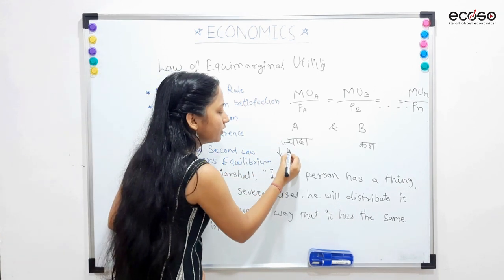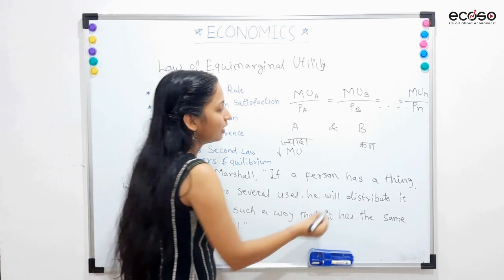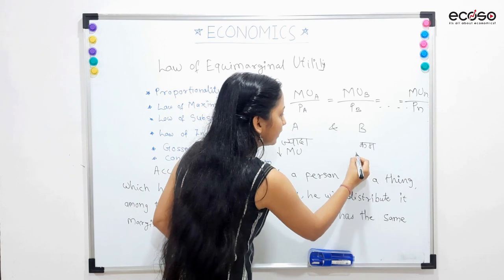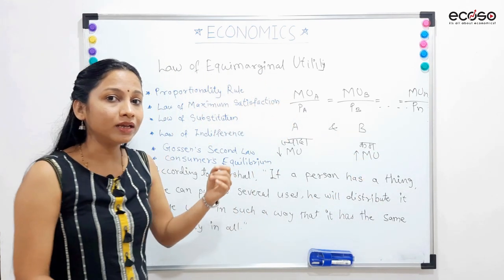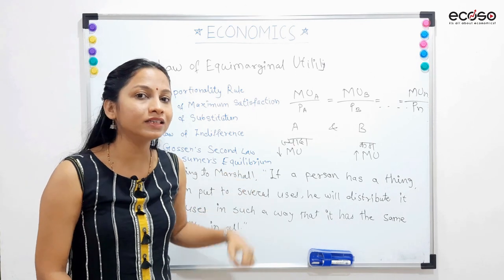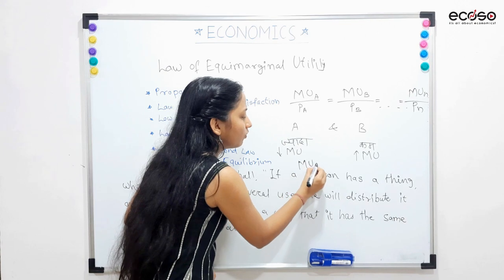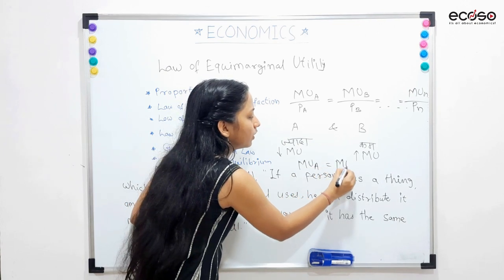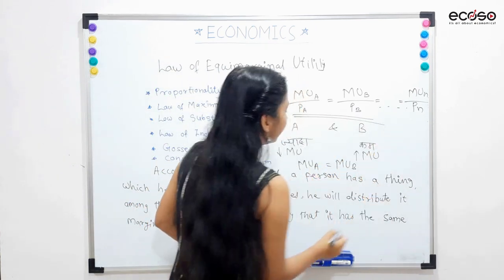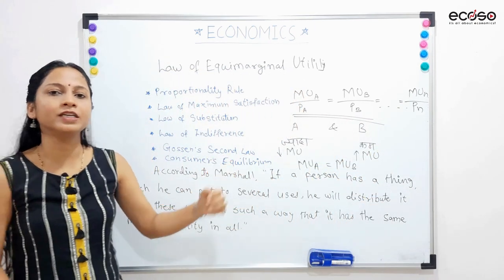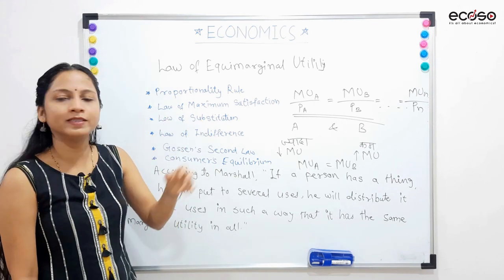A ki zyada units purchase karuuungi ki wajah se uski marginal utility decline hoti jayegi, aur yahan units kam hoti jayenge ki wajah se iski bhi marginal utility increase hoti jayegi. Aur main continually substitute karti jaungi, jab tak marginal utility of A is equals to marginal utility of B nahi hoti — matlab jab tak yeh ratio satisfying nahi hota — tab tak main substitution karti jaungi. Yehi reason hai law of substitution ka.